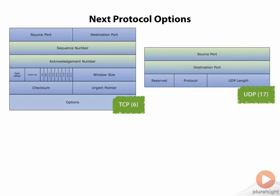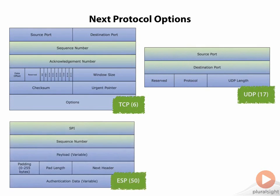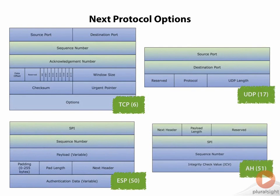We might see protocol number 17 in the protocol field, and if that's the case, then what we should see next is UDP. We might also see protocol number 50, which points to ESP. Or we could see protocol number 51, which points to AH.